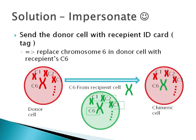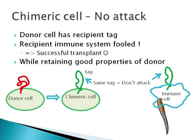Well, there is no easy solution as of today. But we can think of letting the donor cells impersonate the patient's own cells. We know that chromosome 6 is the key to the immune system. How about replacing just the chromosome 6 in the donor cell with the chromosome 6 from the patient's cell? I am calling the resulting cell a chimeric cell, as it contains parts from two different persons. The donor cells start showing the patient's ID tags, and the patient's immune system is fooled.